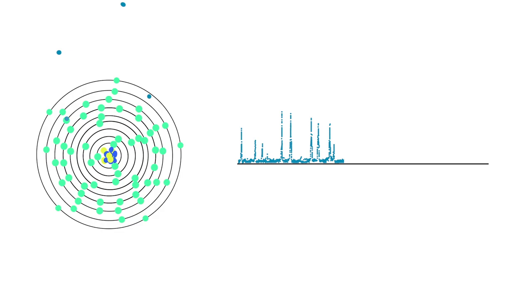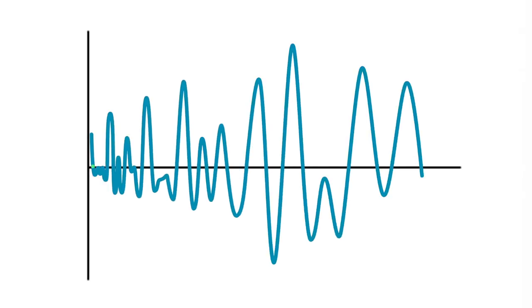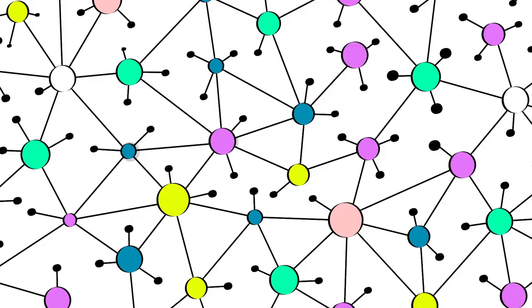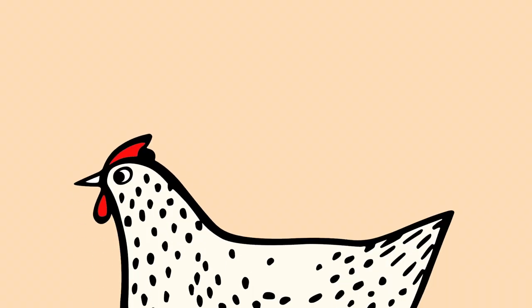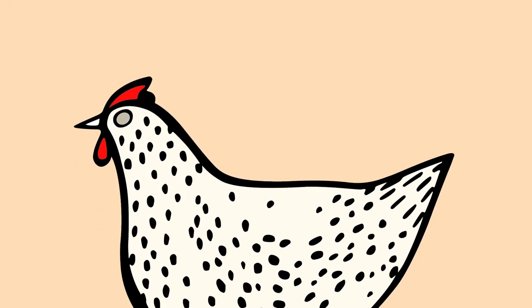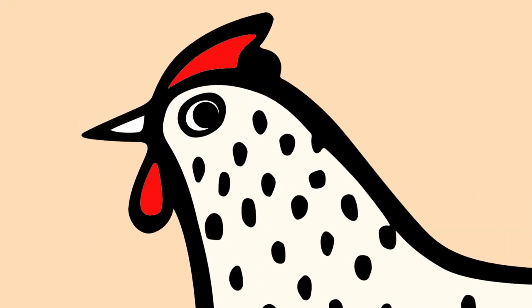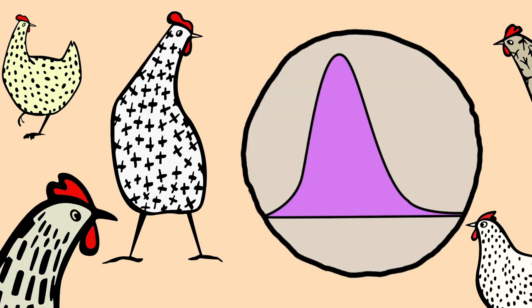Two decades later, the pattern was seen in gaps between consecutive numbers called zeros of the Riemann zeta function. These zeros are thought to control how prime numbers are distributed. Since then, the pattern has been seen in many different settings, like in human bones and social networks. Just recently, it showed up in yet another unlikely place — the eyes of chickens. It was the first instance of the pattern seen in biology.